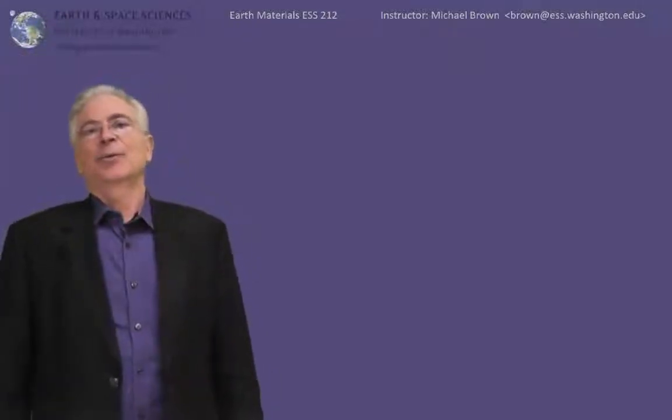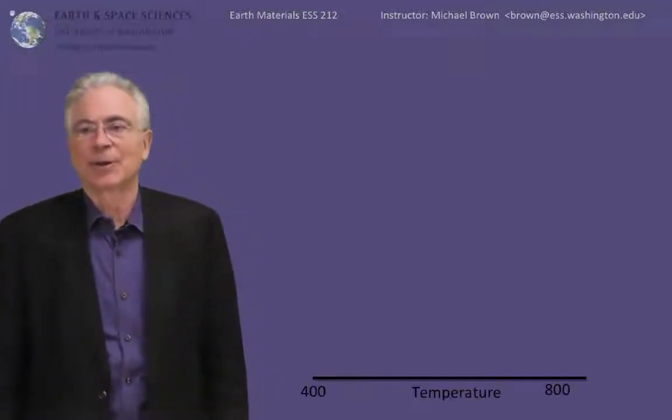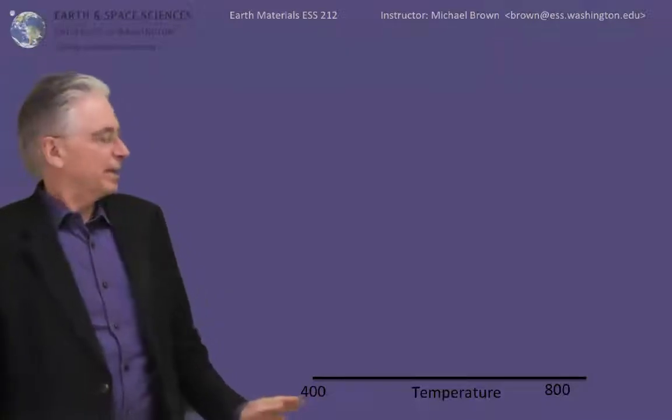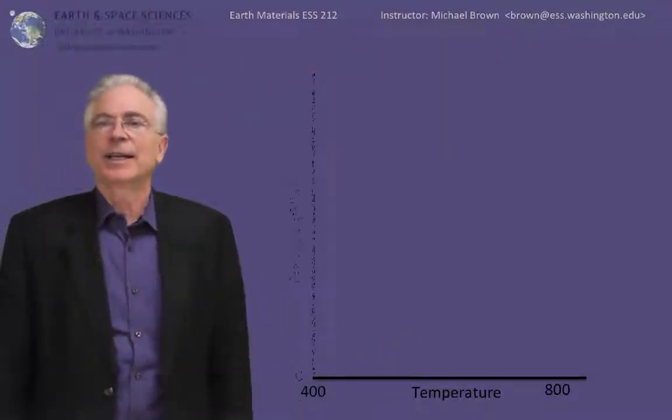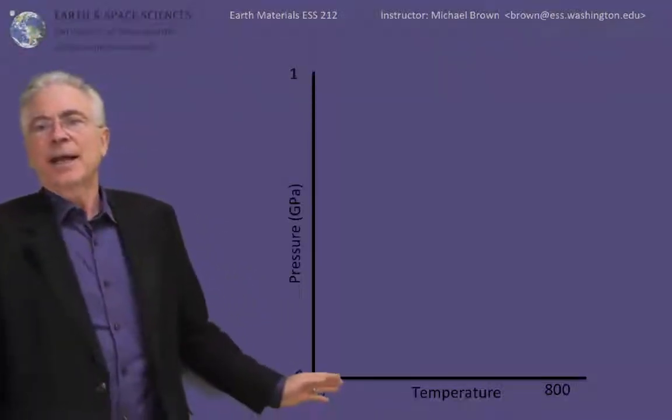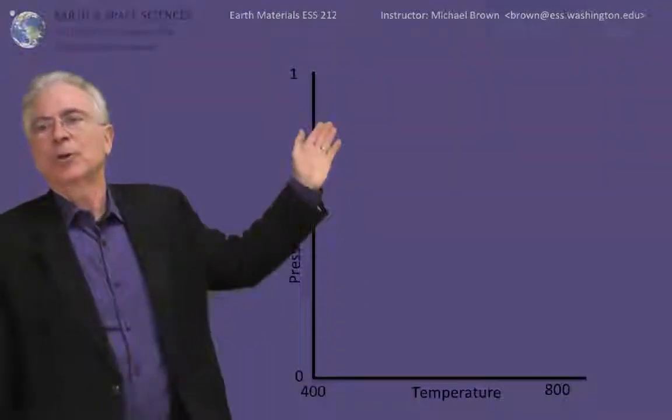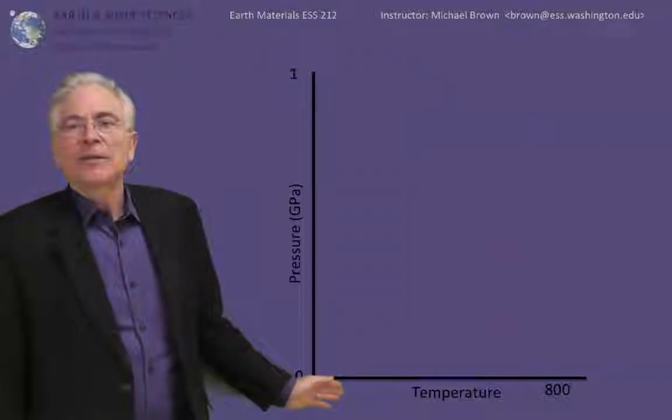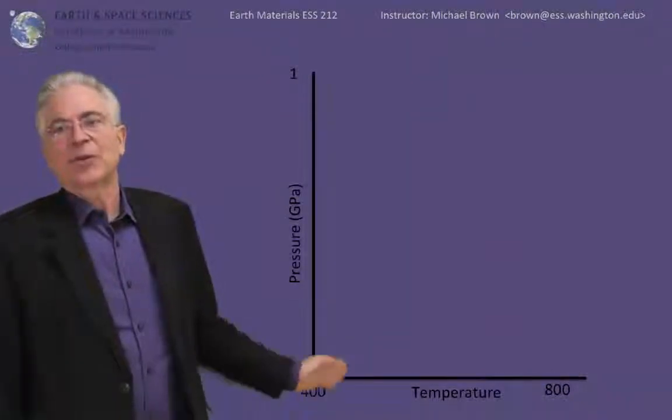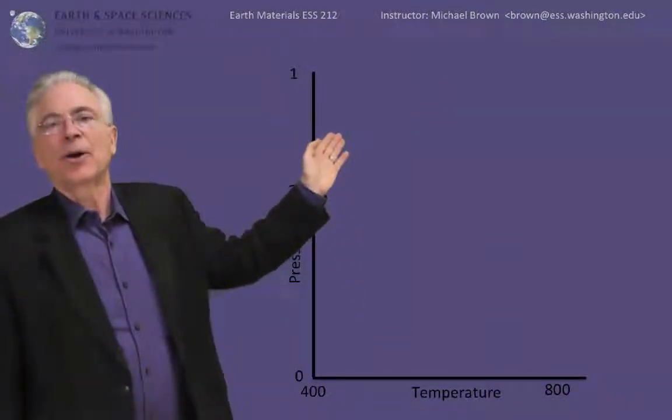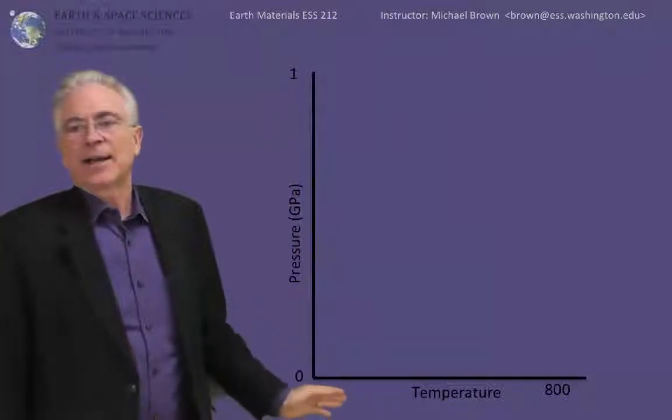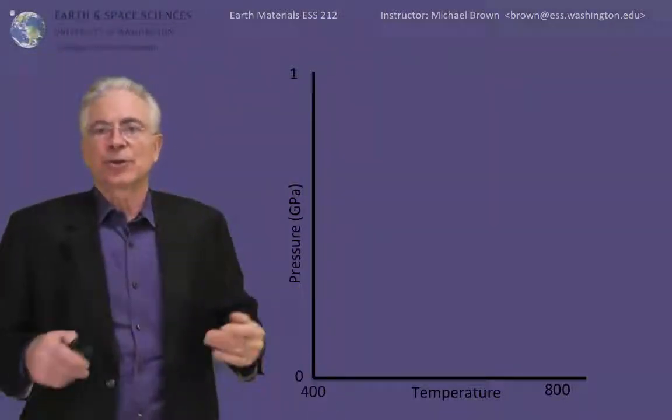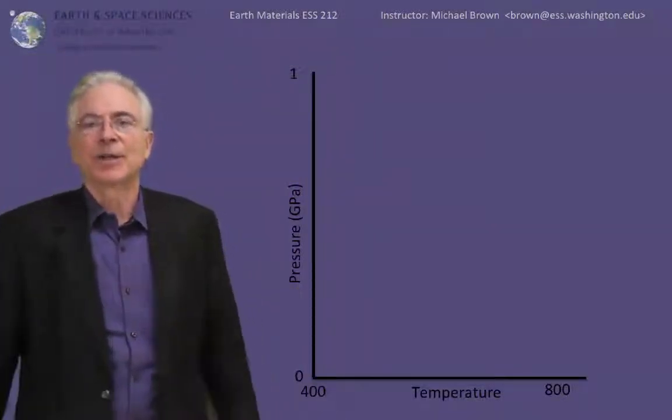So now let's put this together with the pressure temperature plane. I'm going to use a temperature scale going from 400 to 800 degrees centigrade, a pressure scale from zero to one GPa. So we're encompassing all of the crust from the surface to the deepest part of the continental crust and ranges of temperatures appropriate for rocks buried in the earth.